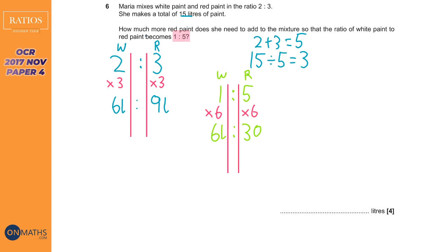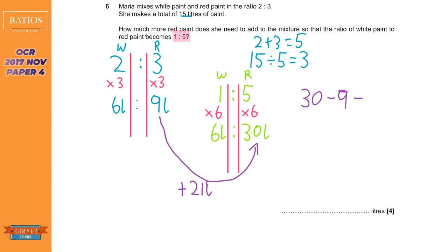We have six liters of white paint to every 30 liters of red paint. We've moved from having nine liters of red paint to needing 30 liters of red paint. How much more red paint do we need to add? All we've done is 30 take away nine which equals 21, so the answer is 21 liters.